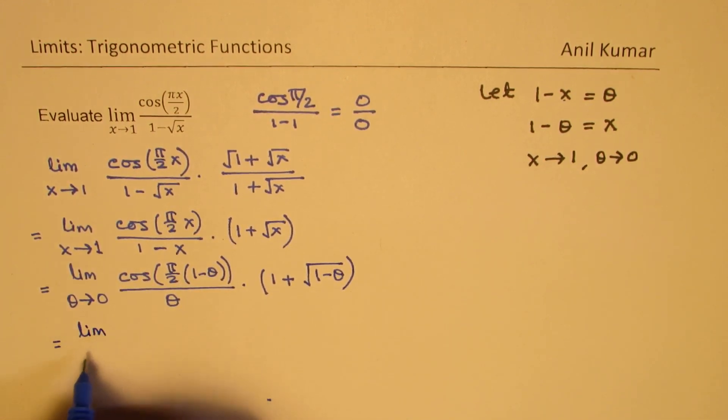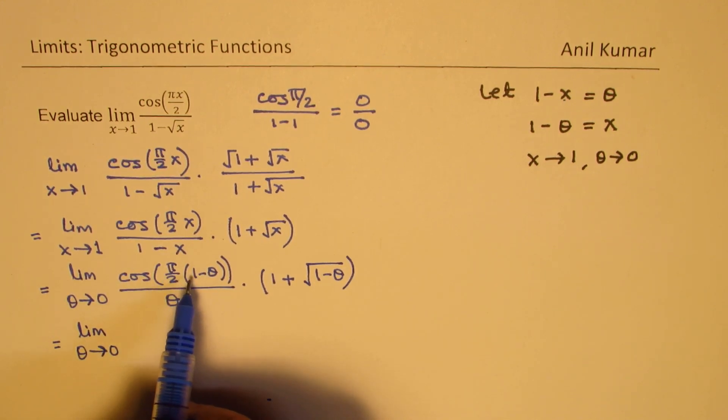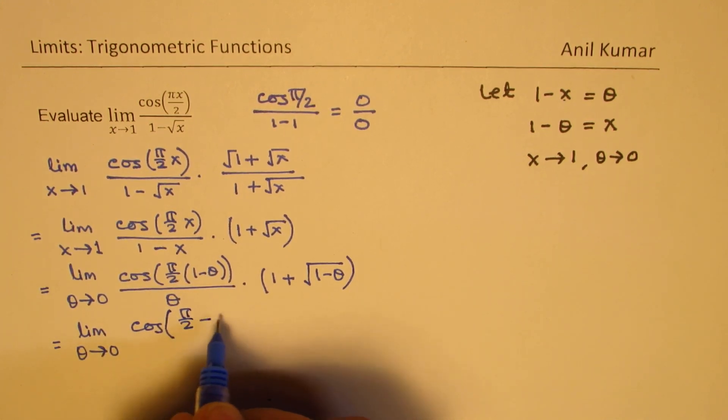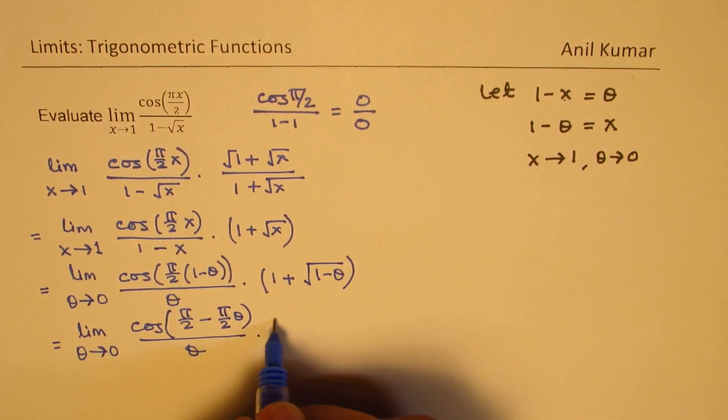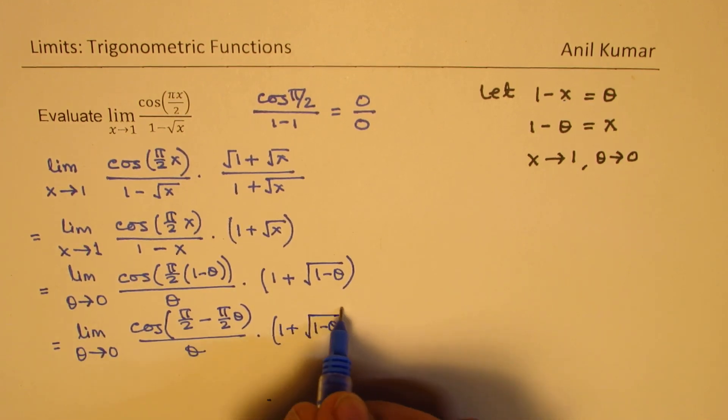Now here in the numerator, we have limit theta approaches 0, cos(π/2 minus πθ/2). Let me rewrite this. We could write this as cos(π/2 - πθ/2) divided by theta, and (1 plus square root of (1-θ)).